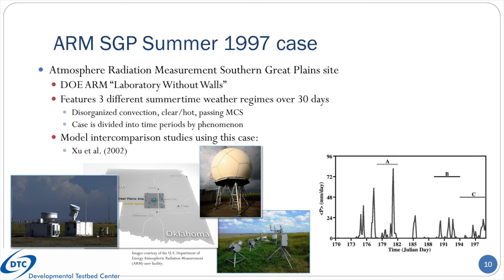Another deep convective case, albeit over land, is the ARM SGP Summer 1997 case. This case is situated over the ARM Southern Great Plains Observational Supersite, or Laboratory Without Walls, and used a wide array of remote and in-situ measurement platforms over June and July of that year. Over the 30 days of the intensive observational period, the network observed three different summertime weather regimes including disorganized convection, clear and hot, and a passing mesoscale convective system. A fine reference paper for this case was written by Xu and co-authors in 2002.